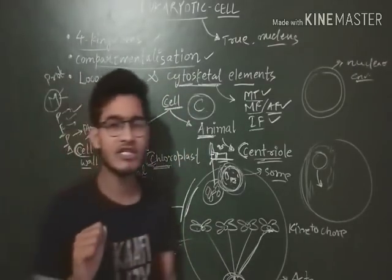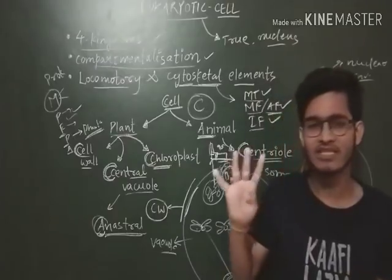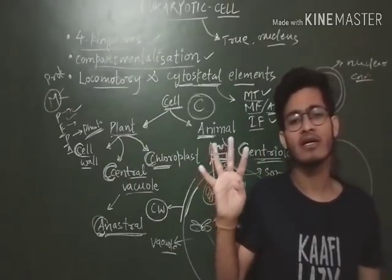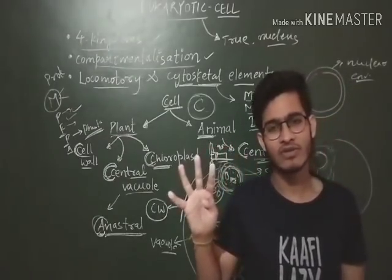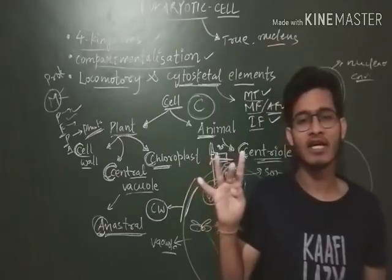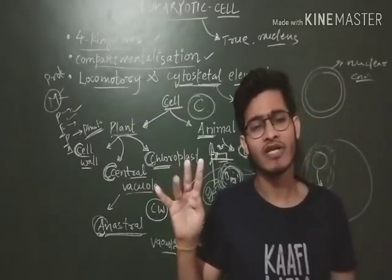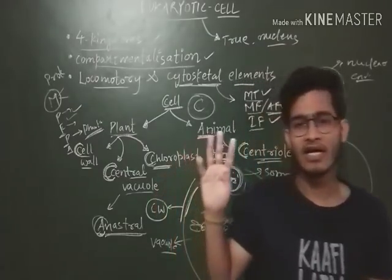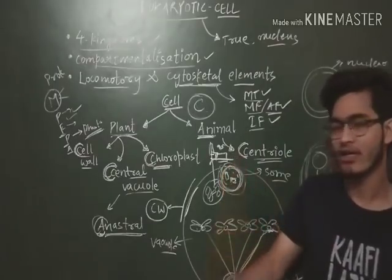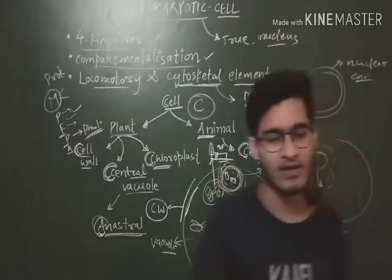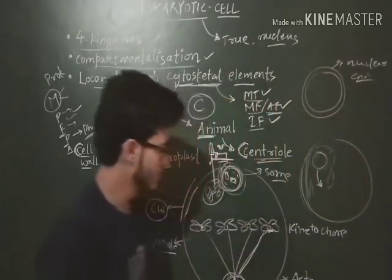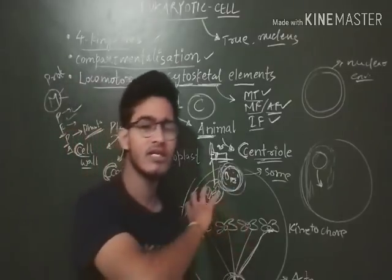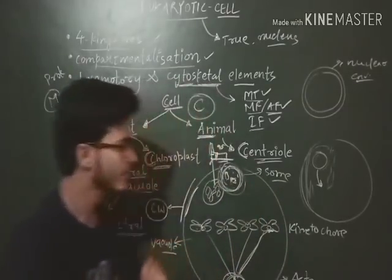So what are the major differences? Cell wall is present in plant cells only. Central vacuole is present in plant cells. Chloroplast is present in plant cells. And centriole is present in animal cells. These are the key differences between plant cells and animal cells.